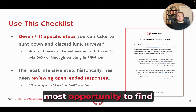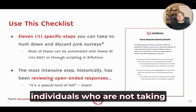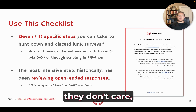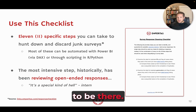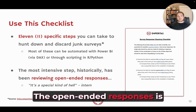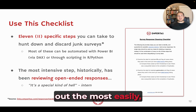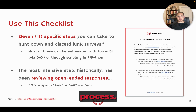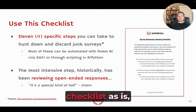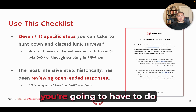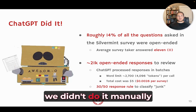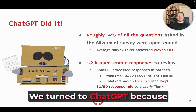Open-ended responses are also where you have the most opportunity to find individuals not taking the survey seriously — those speeding through, not caring, not supposed to be there, or intentionally trying to mess with you. This checklist includes that step, but when you get to it you'd normally have to do it manually. However, we didn't do it manually this last time. We turned to ChatGPT.